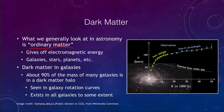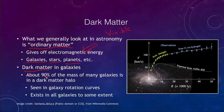Ordinary matter is the stuff that you and I are made up of, as are all the galaxies and stars and planets. It gives off electromagnetic energy, and that includes things like visible light and the rest of the electromagnetic spectrum, whether it be x-rays and gamma rays or radio waves. But dark matter is different. It turns out to be about 90% of the mass of many galaxies, located in a dark matter halo.